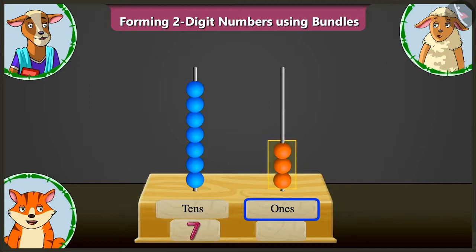Now, in the ones box in the abacus, there are one, two and three beads. So, in the ones box, we have to write three. Well done.